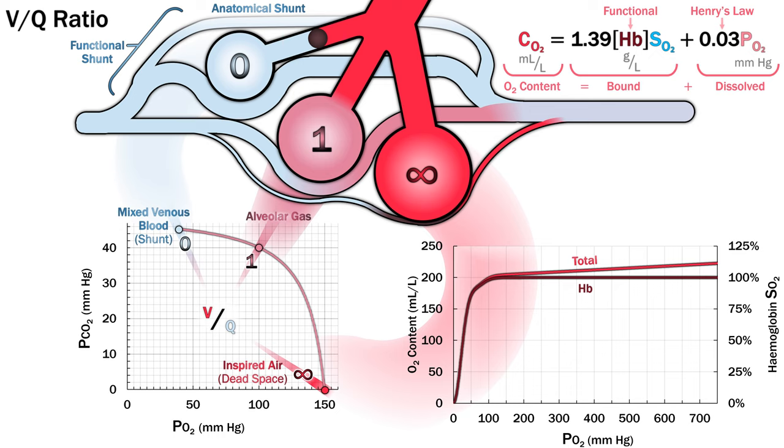Due to simple conservation of matter and the various equilibria, the only thing that really matters when combining differently oxygenated blood is the oxygen content, not the partial pressure or the saturation.